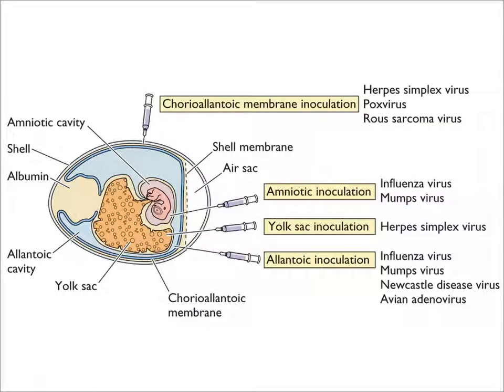One of the mainstays of growing viruses for a long time was the embryonated chicken egg. If you go to the store and buy eggs, they're unfertilized, but there are companies that sell fertilized chicken eggs and you can grow viruses in them. A wide range of viruses can be grown in these eggs, which are essentially like a cell culture except composed of many different cell types.